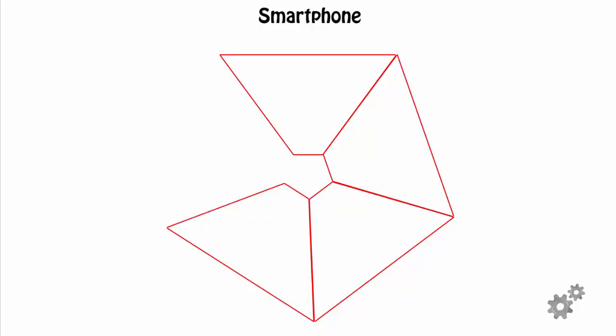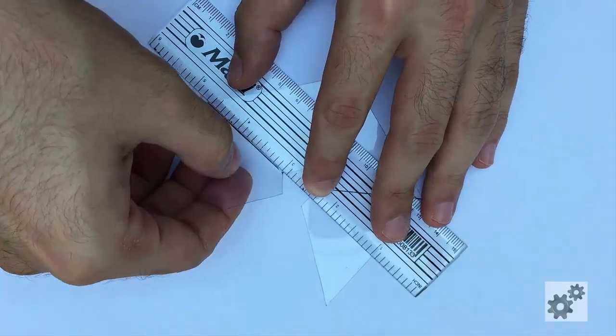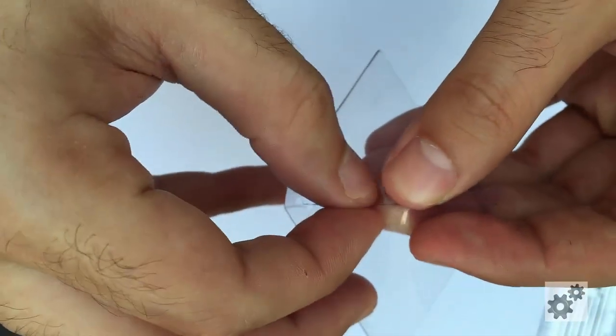To make it simpler, I joined all four shapes in Photoshop and made a single template which you can fold along the corners like this and then stick the two ends with tape. You can download this too by following the link in the description.